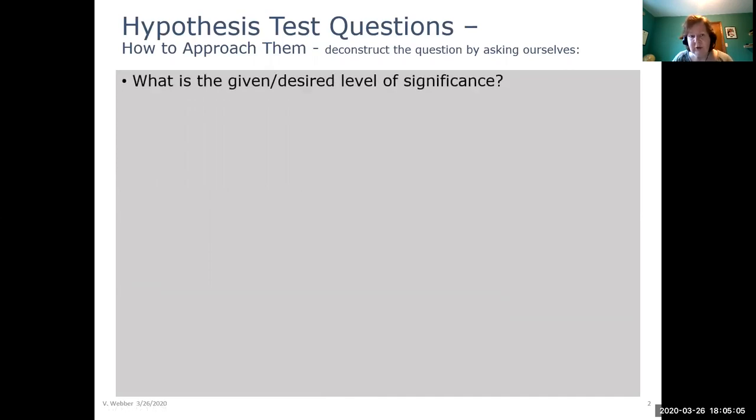We would then want to look for and figure out what's our given or our desired or chosen level of significance. And remember alpha is our little Greek symbol for the level of significance. And if we recall from confidence intervals one minus alpha is our confidence level.